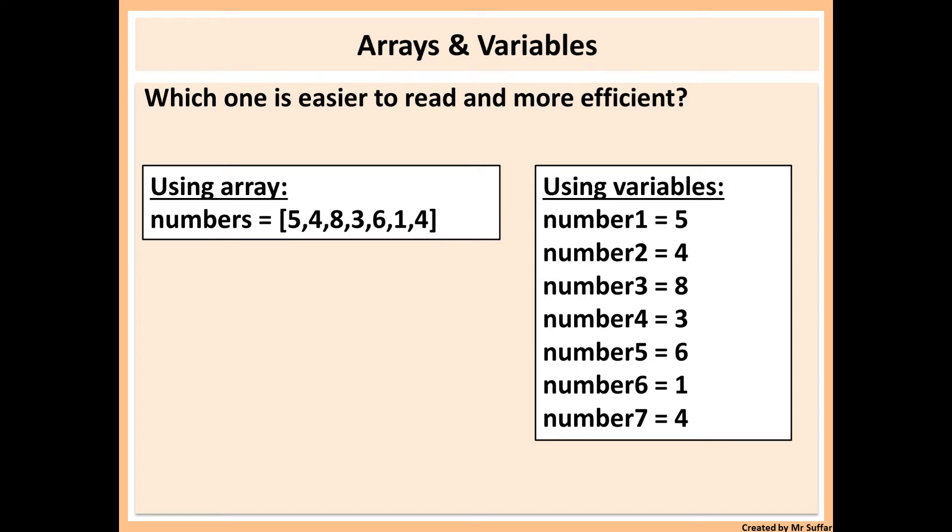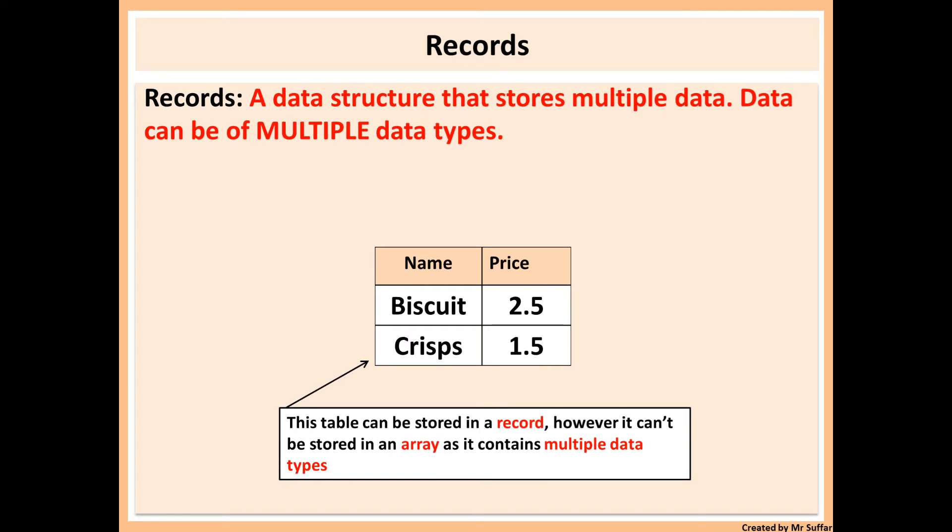A record is another data structure. A record stores multiple data as well, however it can store multiple data types. That's the main difference between an array and a record. Here we can see storing strings and real as well, so float decimal numbers and also strings.